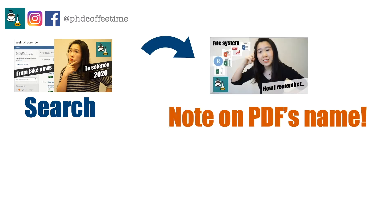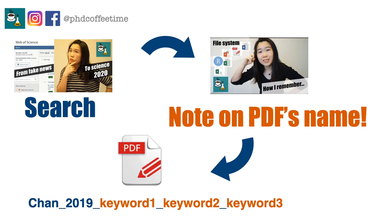PhD is really stressful because you have to swim through the literature sea. The first tip is to name your PDF files with a system. I put a link in the description box for my file system video. I explain how I organize my folders, and when you are downloading the PDF, the process of note-taking already starts. You want to understand who is the first author, the year, and a few keywords associated with it. When you are searching for papers, you are already actively thinking about keywords and why this paper is important to you.